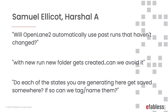Will OpenLane 2 automatically use past runs that haven't changed? Yes, but not for new runs — for resuming old runs, the old folder can be used. Do the states get saved somewhere and can we name them? They're all saved in the step directories as mentioned previously, but there is no option to name them — you will have to point to them via file paths.